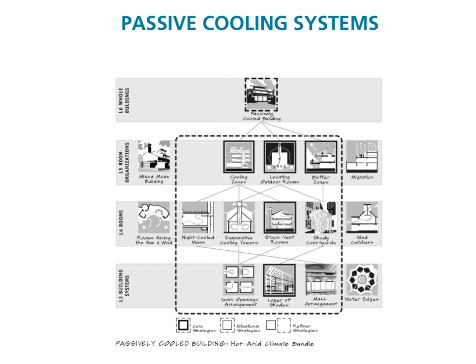This presentation is about passive cooling systems. Here you can see the bundle diagram about a passively cooled building in a hot arid climate. This is from the passively cooled building bundle in the printed volume of the third edition of Sun, Wind, and Light. The bundle diagram shows strategies that are applicable for most of the time for a building in this situation.